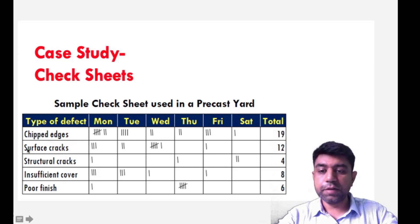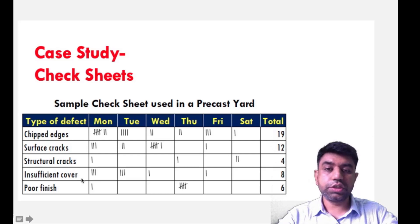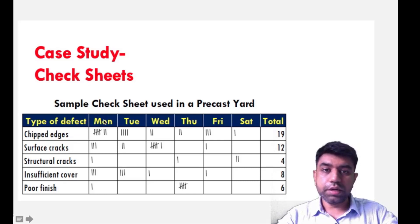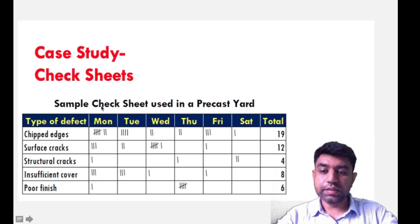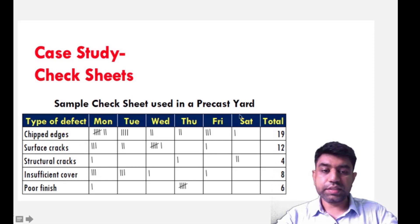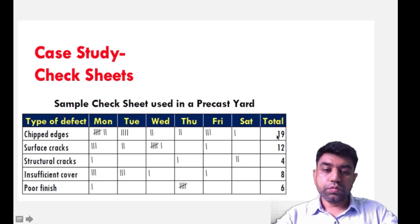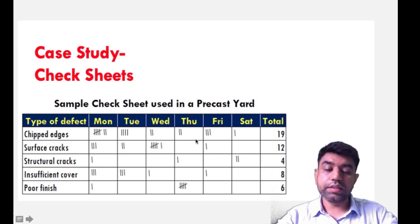The different types of defects are chipped edges, surface cracks, structural cracks, insufficient cover, and poor finish. We represent which defect was present on each particular day — Monday, Tuesday, Wednesday, Thursday, Friday, and Saturday — and at the end we get the total number of each defect. From this we can see that chipped edges is the highest defect, so corrective action needs to be taken first.